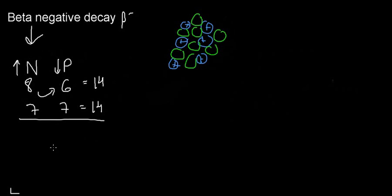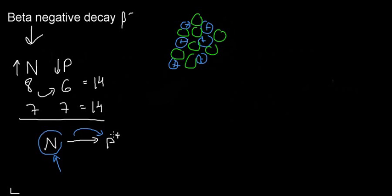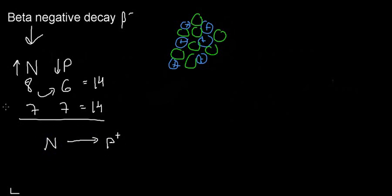It does occur. I can take a neutron and turn it into a proton, but notice: I'm taking a subatomic particle with no charge and turning it into one with charge. This violates the law of conservation of charge, so a negative charge must also be produced.